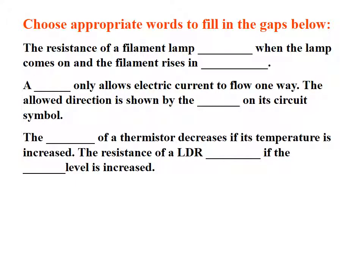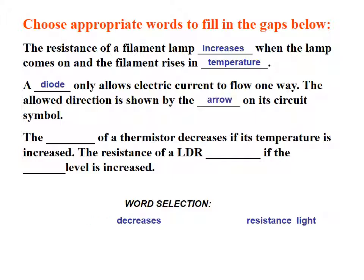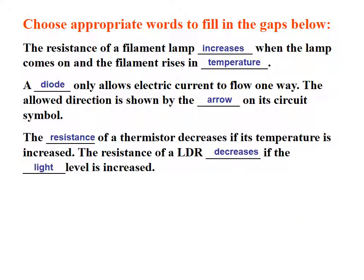To complete this unit: the resistance of a filament lamp increases when the lamp comes on as the filament rises in temperature. A diode only allows electric current to flow in one direction — the allowed direction is shown by the arrow on the circuit symbol. The resistance of a thermistor decreases if temperature is increased, and the resistance of an LDR decreases if the light level is increased. That is essentially electrical circuits for the course.